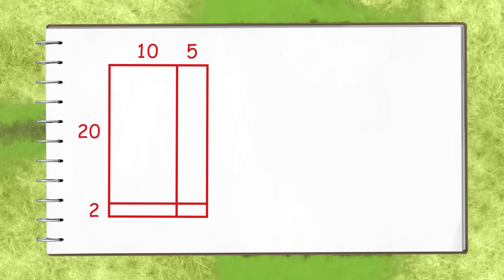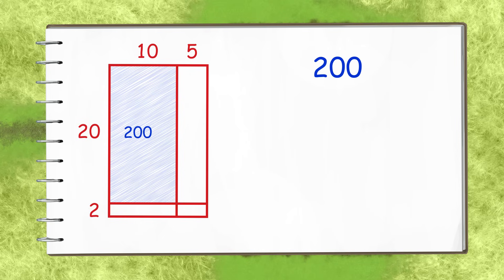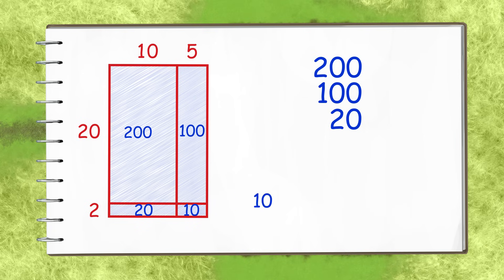Multiply the tens to get the foundation. Then the other place values get multiplied. Add the partial products up.